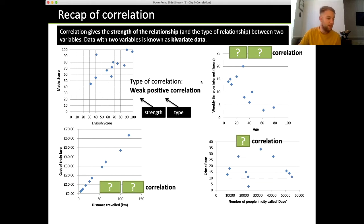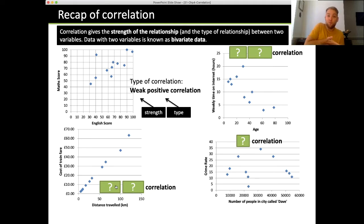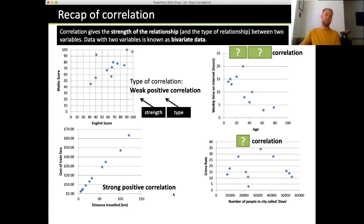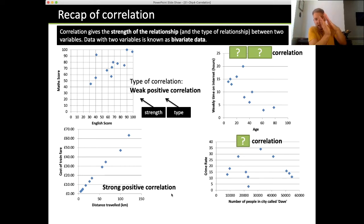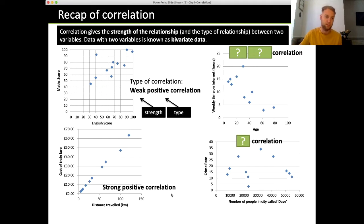Looking at the bottom left, it's again a positive correlation, but the points have fallen really close together — it almost looks like it could be a straight line. So this is a strong positive correlation. They don't have to be exactly on the line; as long as they're all close together going up, it's a strong positive correlation.